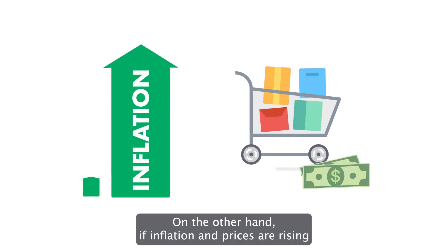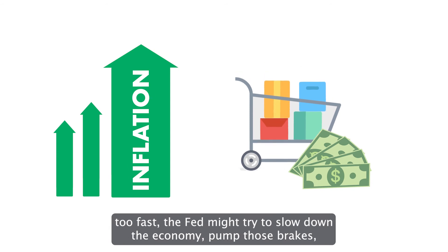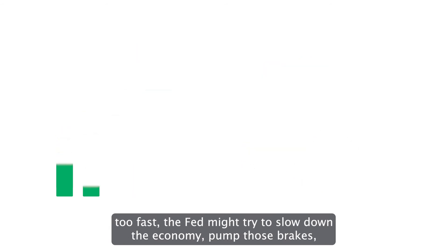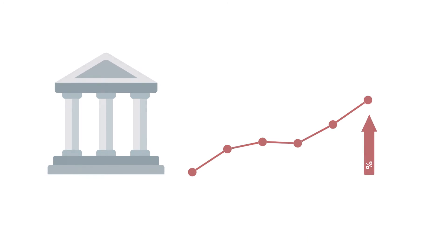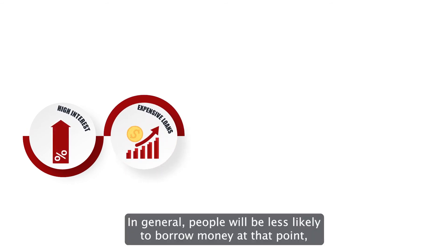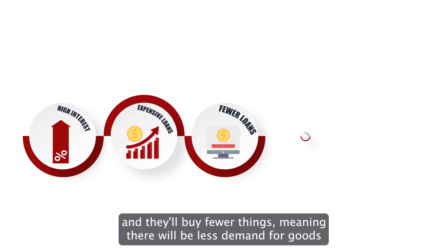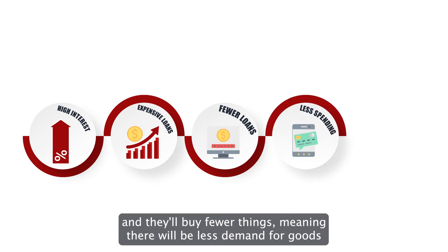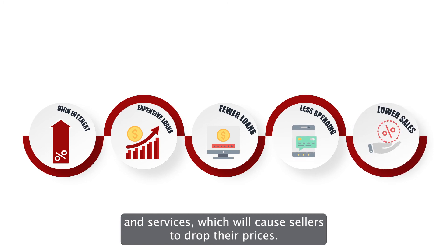On the other hand, if inflation and prices are rising too fast, the Fed might try to slow down the economy — pump those brakes — and keep those prices lower by pushing interest rates up. When interest rates go up, it becomes more expensive to take out a loan. In general, people will be less likely to borrow money, and they'll buy fewer things, meaning there will be less demand for goods and services, which will cause sellers to drop their prices.